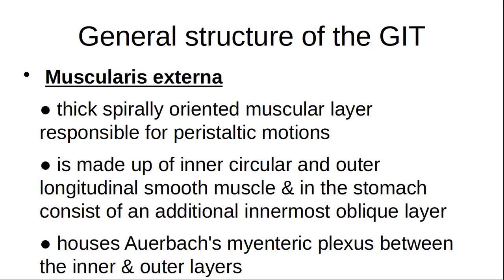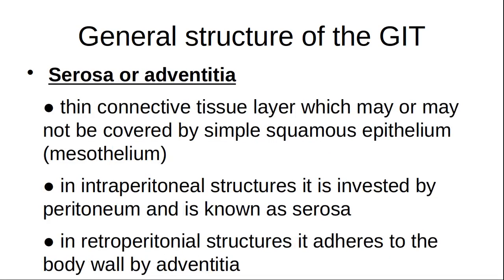Regarding serosa versus adventitia: serosa is connective tissue with mesothelium and is found where the GIT is not attached to the external body wall — in intraperitoneal organs, this is the visceral peritoneum. Adventitia is connective tissue that blends in with the connective tissue of the body wall, fixing structures to the posterior abdominal wall; it is found in retroperitoneal organs.